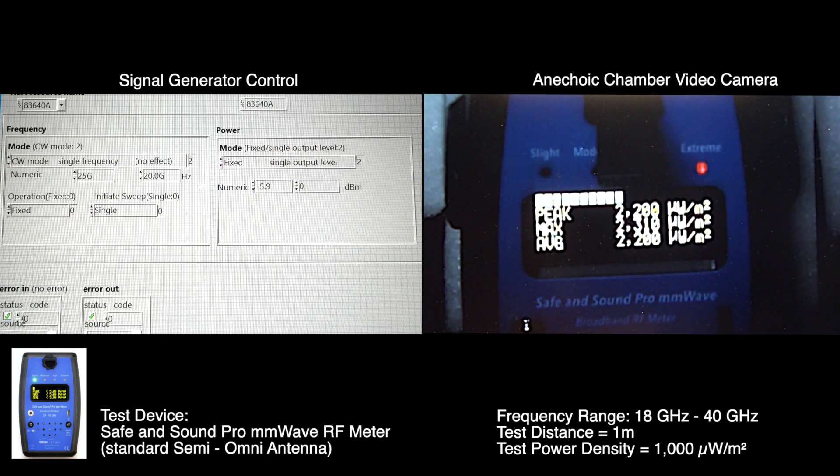25 gigs. Minus 6.5 dBm. Staying the same. 2200. So even response between 24 and 25 gigs.